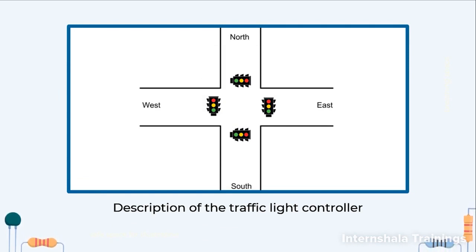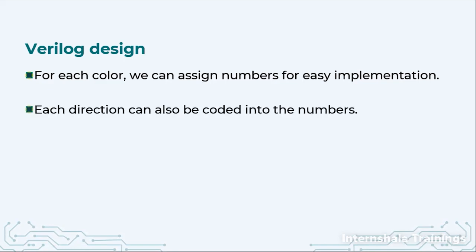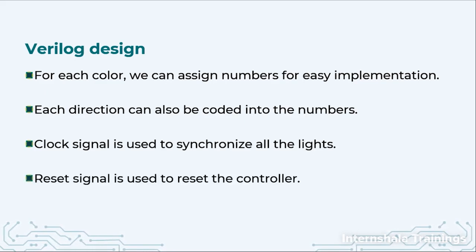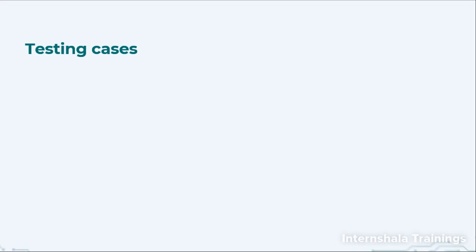A person coming from any direction will have three lights in front of them — green, yellow, or red — and based on that they will stop or move. For each color we can assign a number code: two-bit or three-bit codes. Each direction will also be coded into numbers. A clock signal will be used to synchronize the lights, and a reset signal is always provided so that in an emergency we can reset and start the whole control process again. The coding will be done using the concept of a finite state machine.